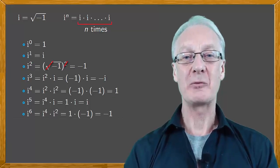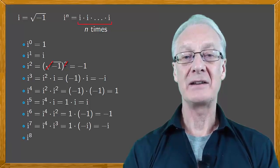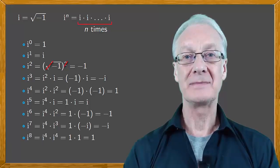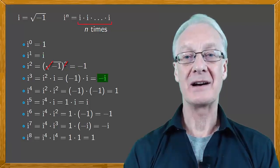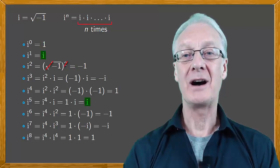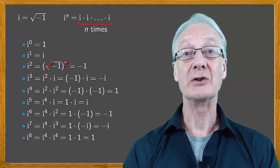Reasoning in the same way, i to the seven equals minus i, and i to the eight equals one. Notice the pattern. One, i, minus one, minus i. One, i, minus one, minus i. It repeats in a cycle. We have a loop.